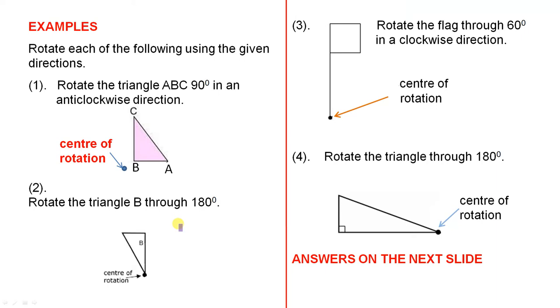The next one, rotate the triangle B, which is this one, through 180 degrees. Now it doesn't say what direction, so you can pick any direction you want.